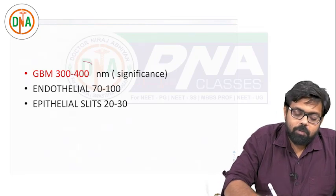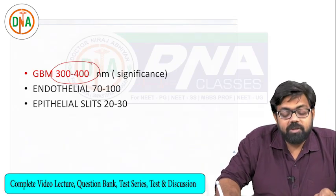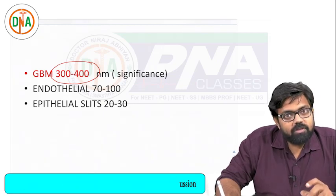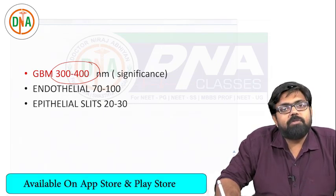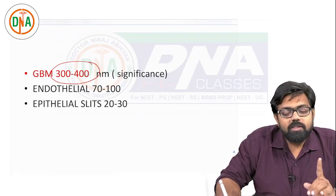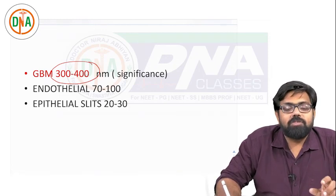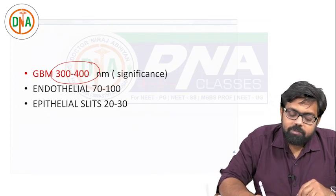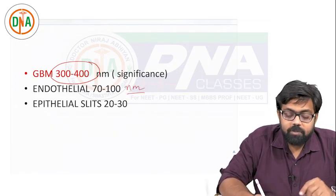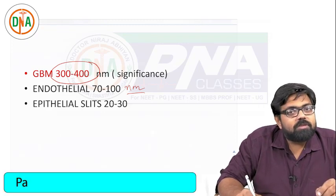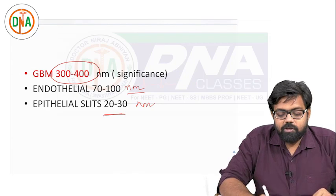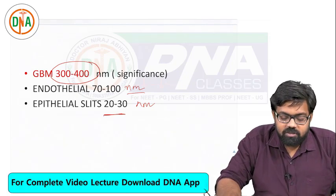The glomerular basement membrane normal dimensions are 300 to 400 nanometers. The significance of remembering this thickness is that in diseases like Alport syndrome it is regularly thickened and thinned. In familial thin membrane disease it is very much thinned out. Endothelial gap junctions are 70 to 100 nanometers, whereas the gaps between visceral epithelial cells are 20 to 30 nanometers. Remember these statistics.